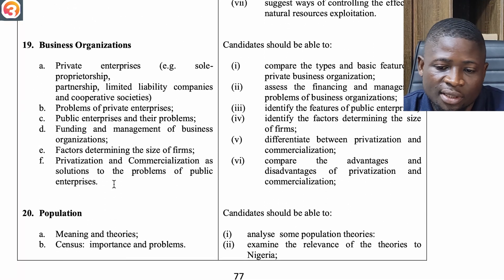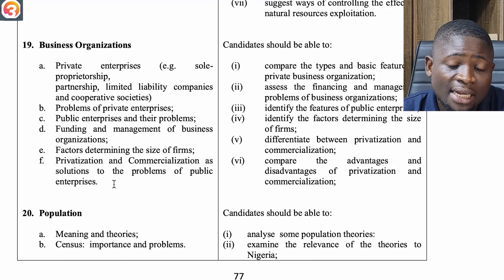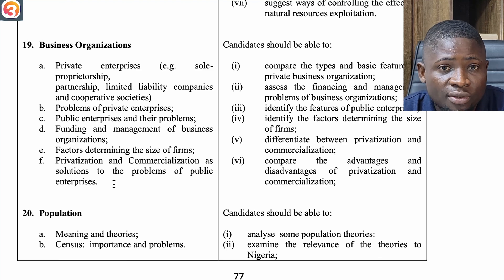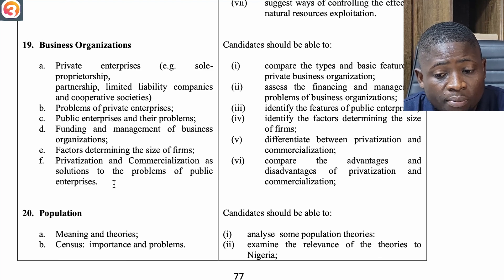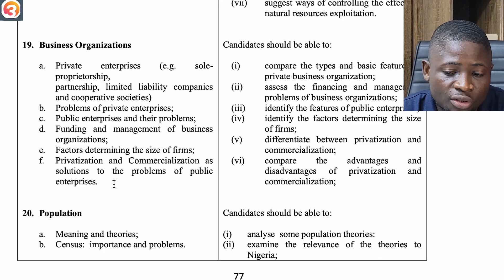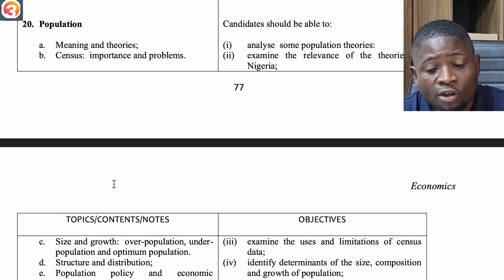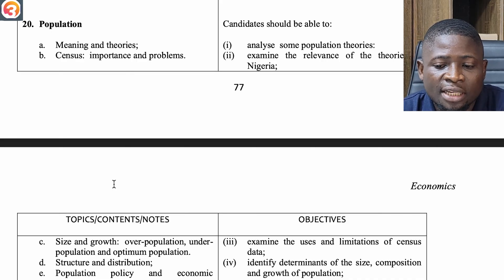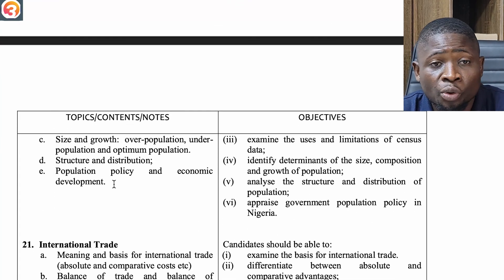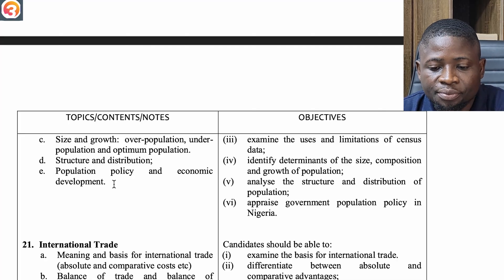The nineteenth topic is Business Organizations — private enterprises: sole proprietorship, partnership, limited liability companies and cooperative societies; problems of private enterprises; public enterprises and their problems; funding and management of business organizations; factors determining the size of firms; privatization and commercialization; and solutions to problems of public enterprises. The twentieth topic is Population — population census: importance and problems; size and growth; overpopulation, underpopulation and optimum population; structure and distribution; and population policy and economic development.